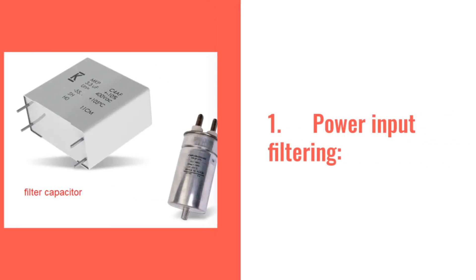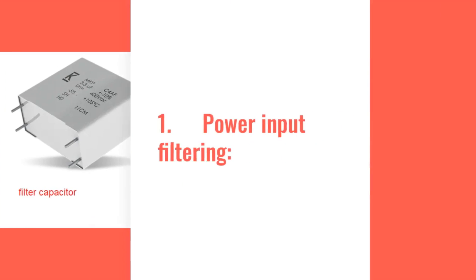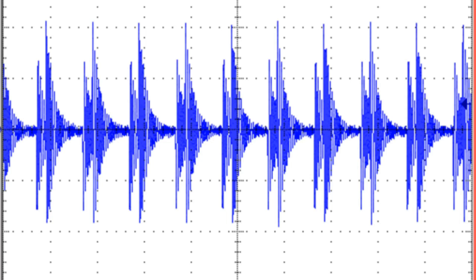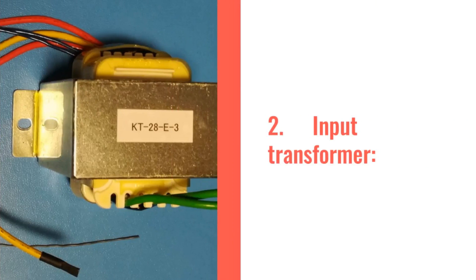1. Power input filtering. In some cases it is necessary to ensure that spikes from the power line do not enter the power supply, and that noise generated by the power supply does not enter the power lines. To achieve this, circuitry to remove noise and limit the effects of incoming spikes is placed at the input to the power supply. In many cases any filtering at this point is quite minimal, although for specialist supplies more complex circuits may be used.